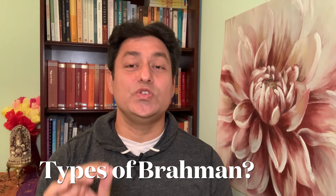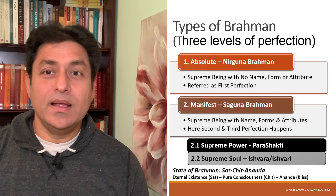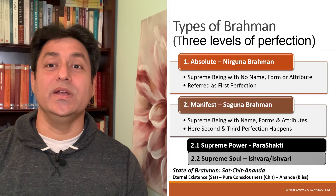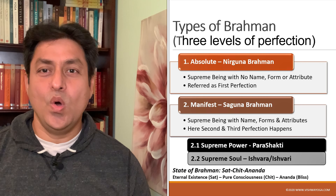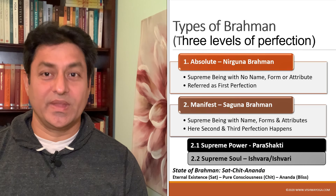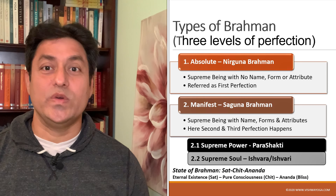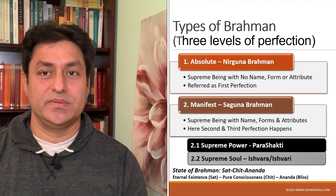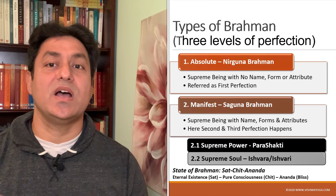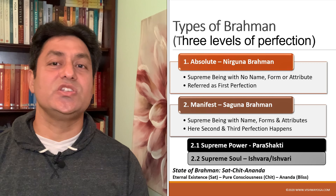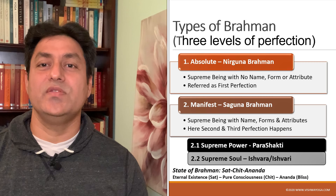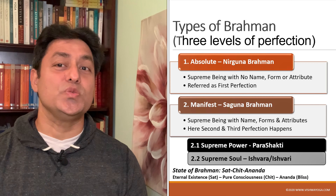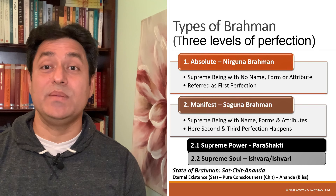Let me dive a little bit into Brahman. On a high level, as mentioned in various scriptures, there are two types of Brahman with three levels of perfection. The first type is the absolute Nirguna Brahman — it is the state of supreme being with no name, form or attribute. It is the state of sat-chit-anand, meaning eternal existence of pure consciousness filled with bliss. Here, the power of supreme stays in a sleep or inactive state.